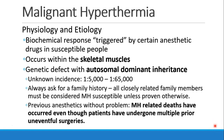The incidence varies depending on what population you're dealing with. In general, between 1 in 5,000 to 1 in 50,000 or 60,000. This is why we always ask for a family history, because any closely related family member to someone known to have MH has to be considered MH-susceptible until proven otherwise.